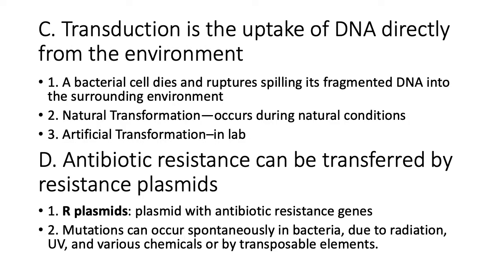Plasmids can also carry antibiotic resistance genes - these are called R-plasmids. Mutations causing antibiotic resistance can also occur spontaneously due to radiation, UV, or chemicals. Most commonly, antibiotic resistance spreads through transposable elements - jumping genes that can move from one chromosome to another - as seen with McClintock's maize research. This is relevant to MRSA and VRSA.